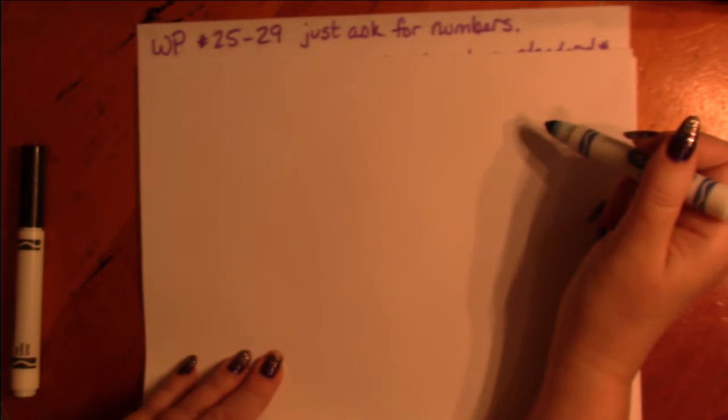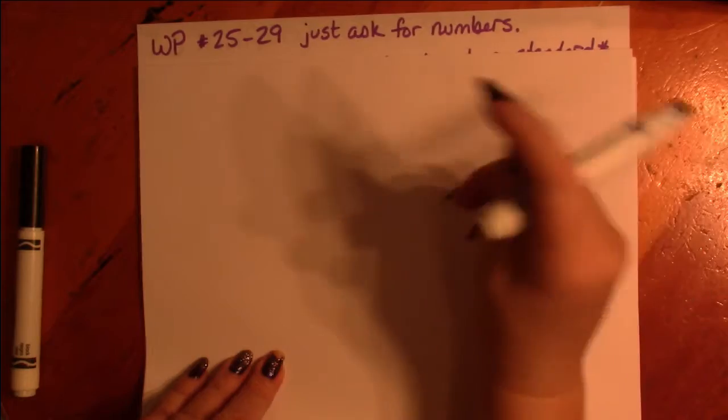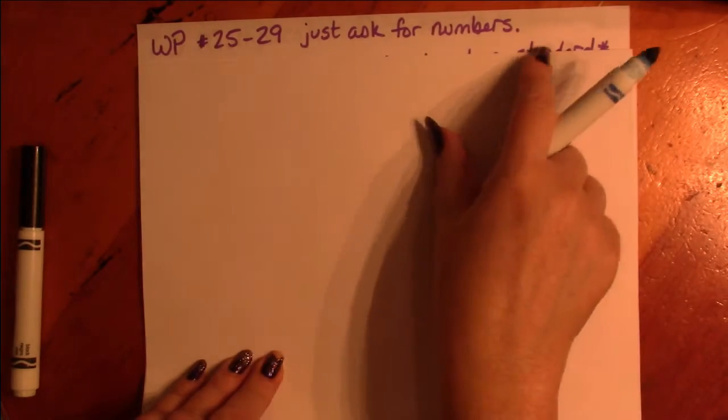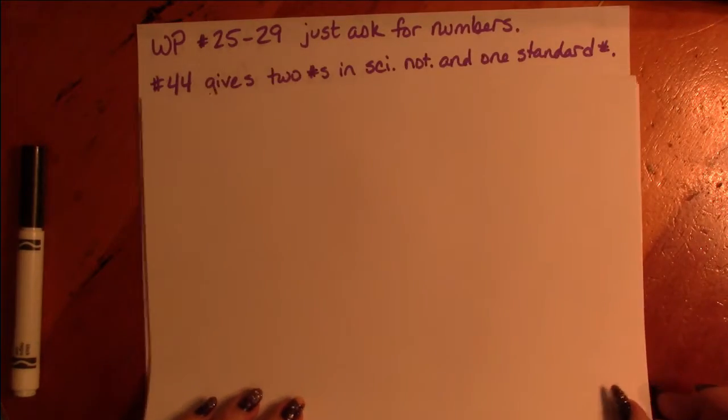So the word problems for Chapter 7, Section 1, numbers 25 through 29 are just asking you for numbers. They're just putting them in word form.